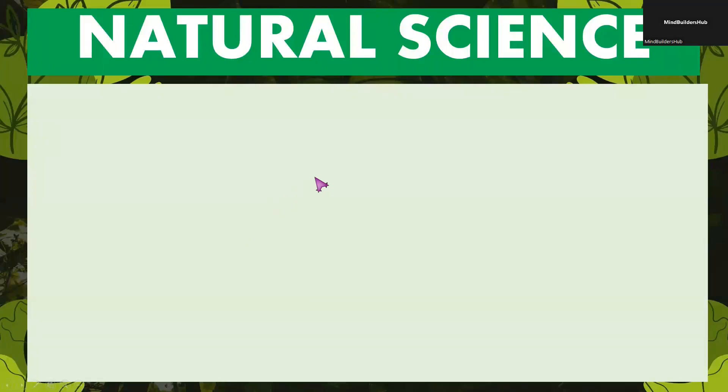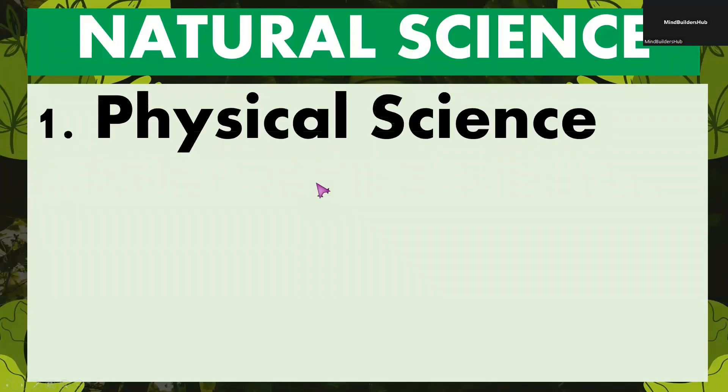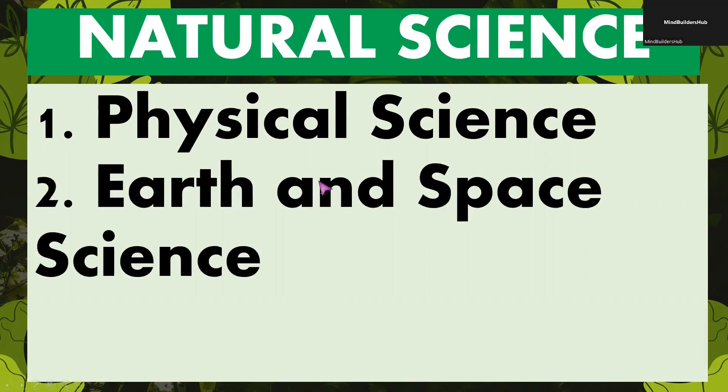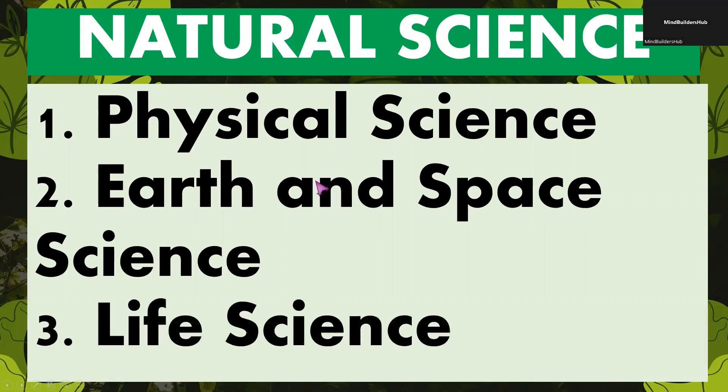Science or the natural science involves the following major studies: one is physical science, second is earth or geology and even space science, also known as astronomy, and lastly, life science, also known as biology.